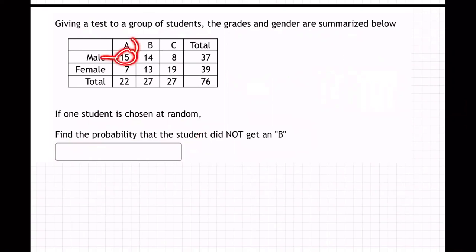What is this 15? These are males who got an A. What is this 14? Males who got a B. What is this 7? Females who got an A, etc. So when they ask us for probability did not get a B, it's the number we want. Probability is always the number we want over the total number.